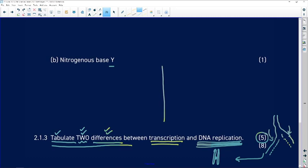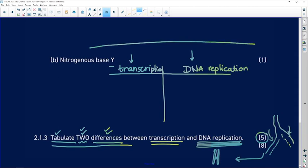But let's draw a table. The table must have headings for our columns. So our one column is going to show transcription, and the other is going to show DNA replication. And we're going to have a heading for our table, differences, I'm doing it in shorthand now, differences between transcription and DNA replication. You write it out in full, you underline it neatly with your ruler. So we have to get two differences.